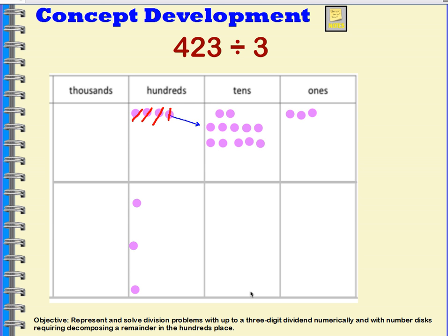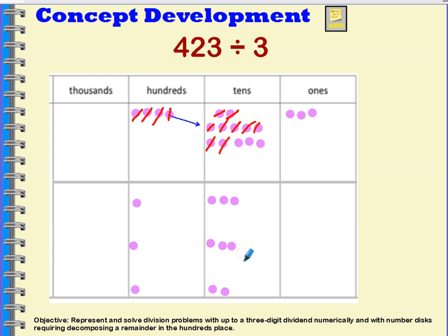So I'm going to take these tens and distribute them into the groups — three at a time, one for each group. I'll draw a line through three of them and put them in the groups. I'll continue distributing these tens into my three groups until I don't have any tens left. And that's the last of the tens.